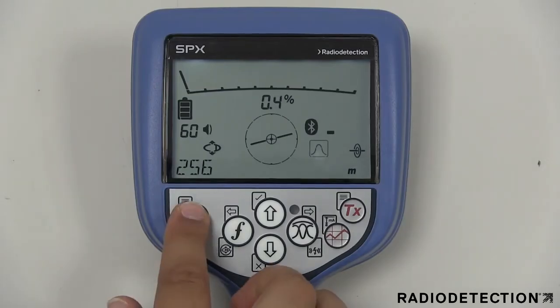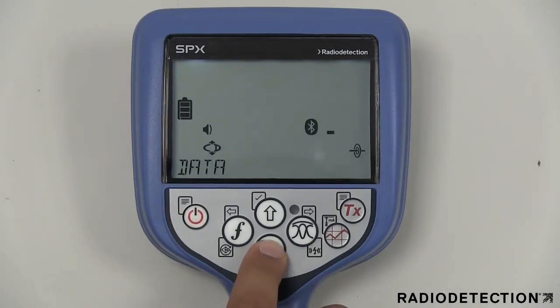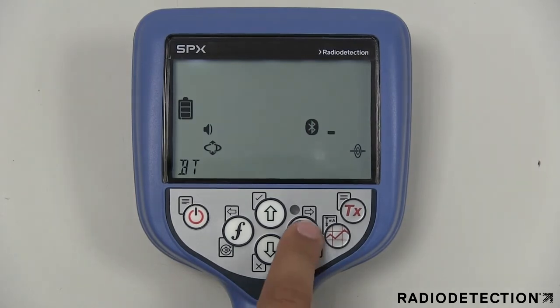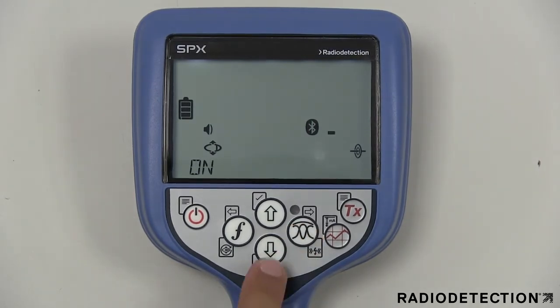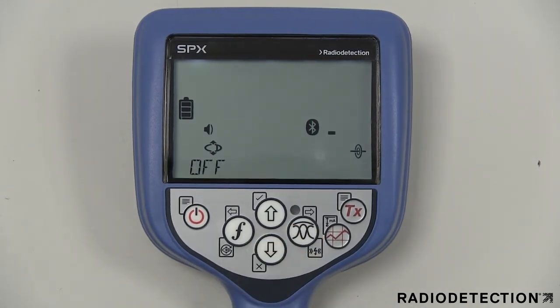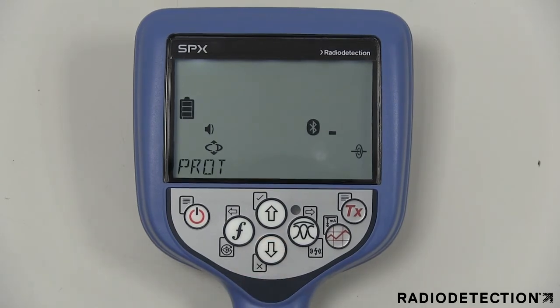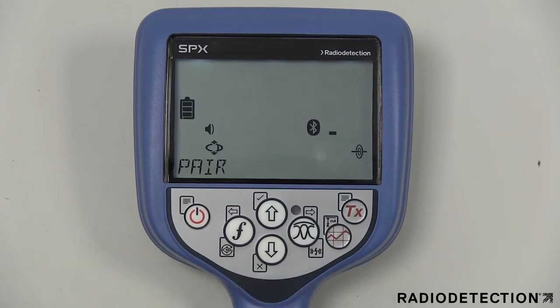The BT menu option allows you to manage the Bluetooth connection between the locator and the TX transmitter and other devices such as PDAs. The protocol action allows you to tell the locator what format the data should be sent in to the external device. The reset option can be used to forget all connections on the device. The pair submenu has two options allowing you to connect to a TX transmitter or an external device.